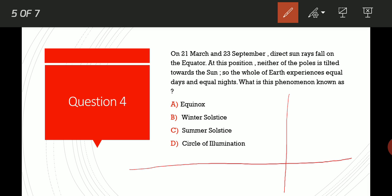What is this phenomenon known as? Option A: Equinox. Option B: Winter solstice. Option C: Summer solstice. Option D: Circle of illumination. The correct option is Option A, equinox.